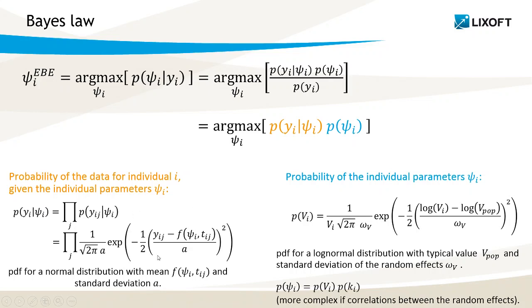For example, here is the formula when the observations are described by a normal distribution and a constant residual error. The second term is the probability distribution of the individual parameters within the population. The example formula here is for a log-normally distributed parameter.